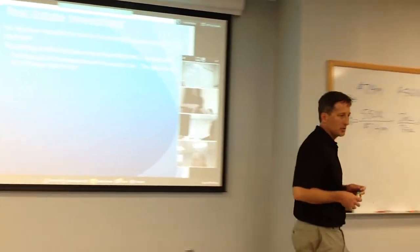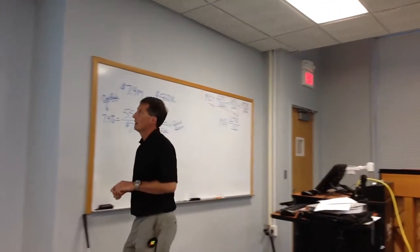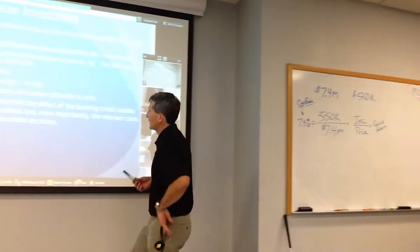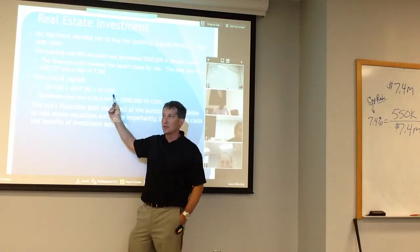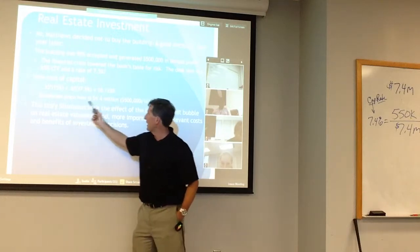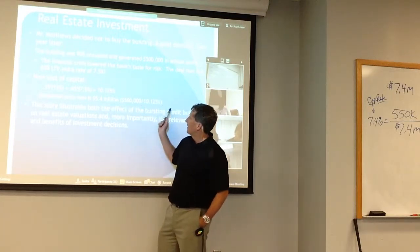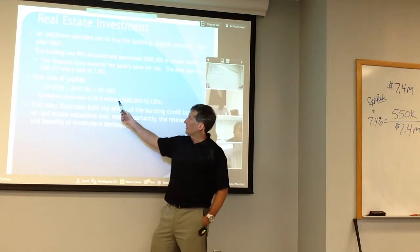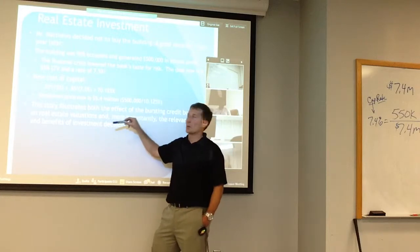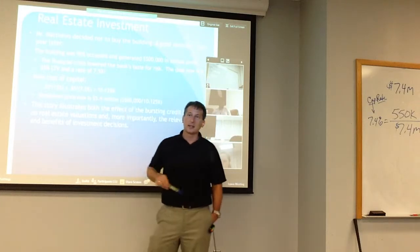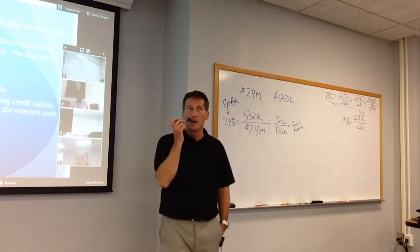If we calculate the new cost of capital, you need a 10% return. The break-even price is now $5.4 million instead of $7.4 million. So if you bought at $7.4 million prior to the crash, you now have an asset that's dropped to a $5.4 million break-even — you were in a lot of trouble.